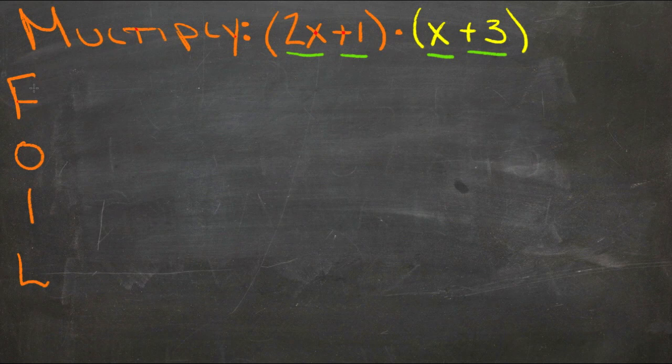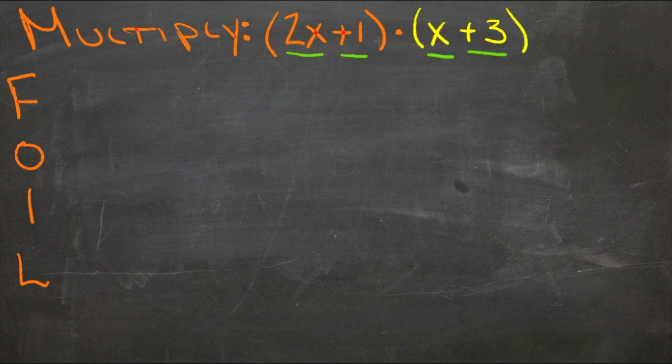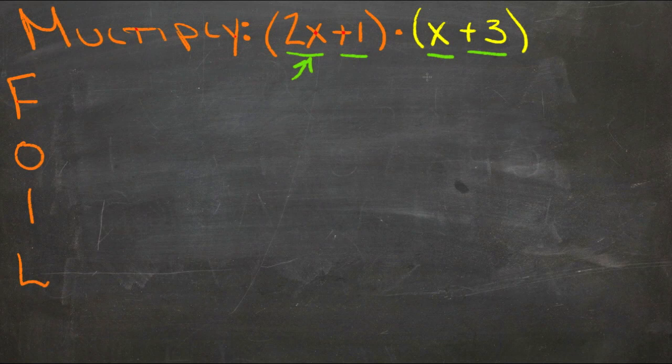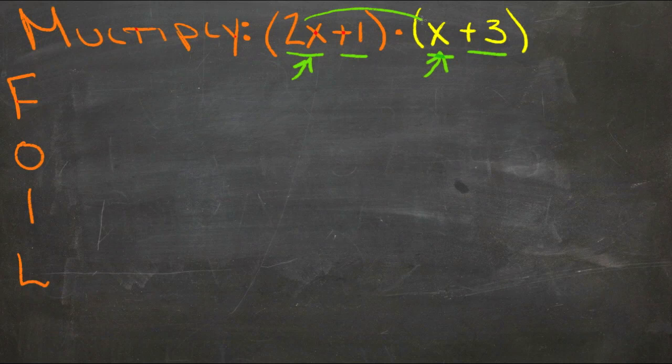So step 1 here is to multiply the first two terms. What that means is the first term in this set, so this one, multiplied by the first term in this set, which is this one. So we have 2x times x and that gives us 2x squared.